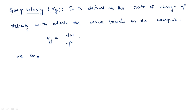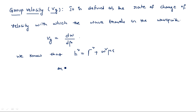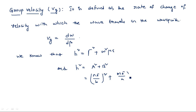Now, whatever calculation we started for the phase velocity, I am also starting with the same expression. We know that H² is equal to gamma² plus omega² mu epsilon. We also know that H² is related to A² plus B², where A is N pi by B and B is M pi by A. So H² equals (N pi/B)² plus (M pi/A)².